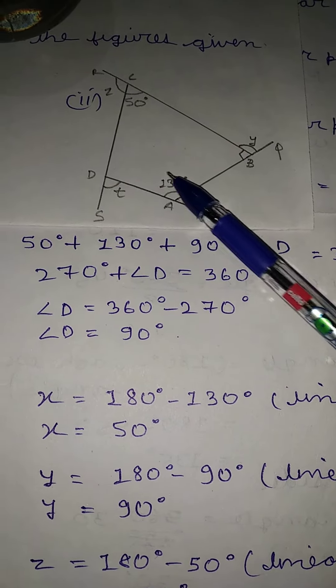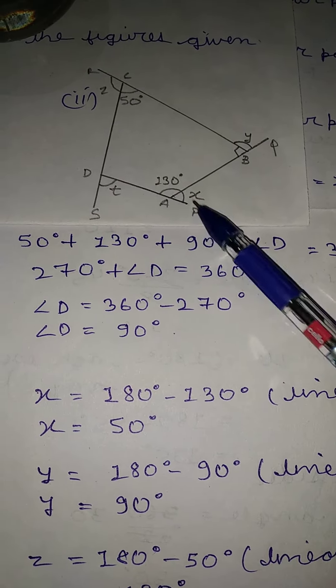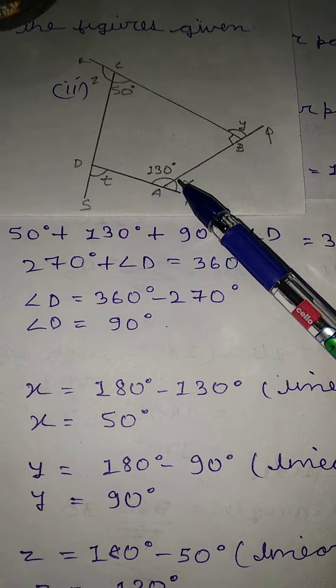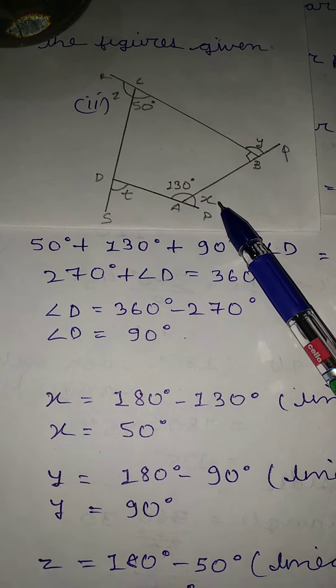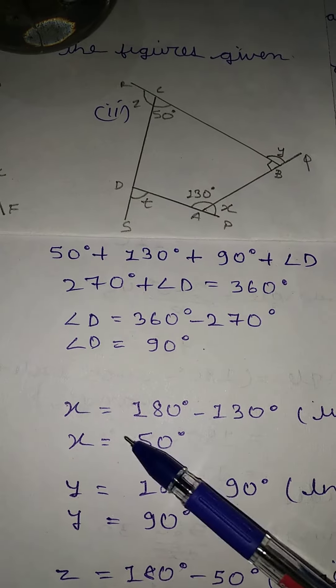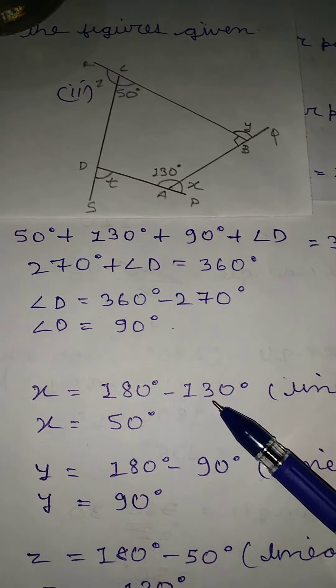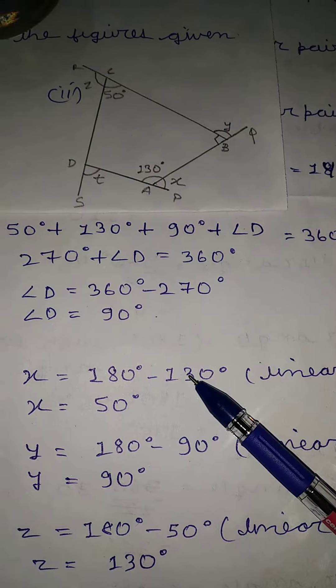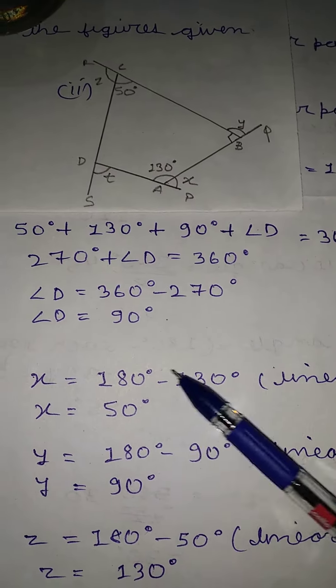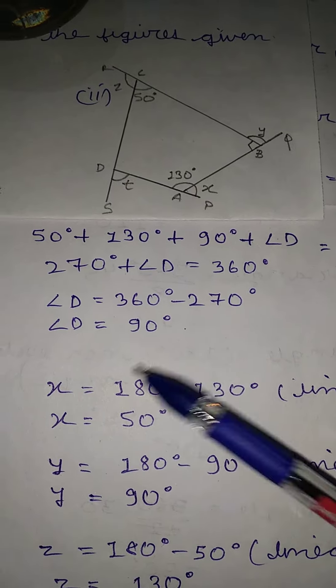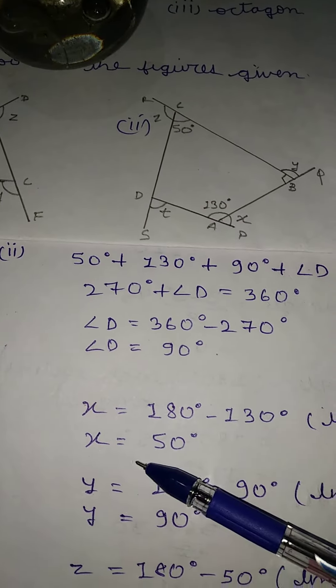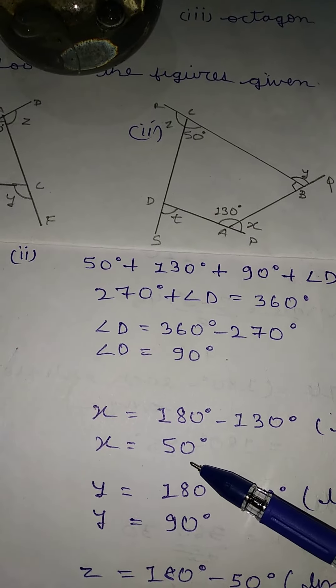Next, we find x. This is a linear pair, so angle x is equal to 180 minus 130 degrees. Therefore, the value of x is equal to 50 degrees.